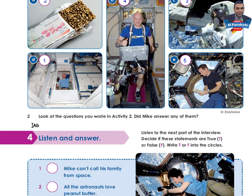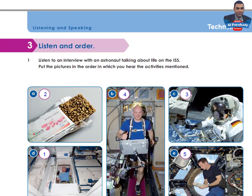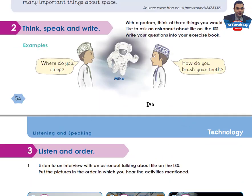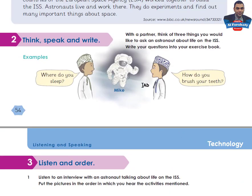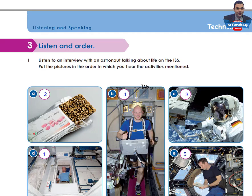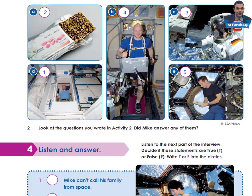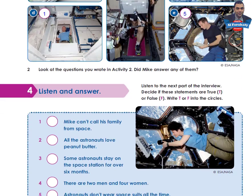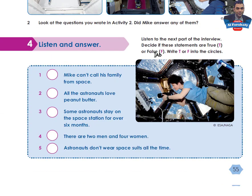Look at the questions you wrote in Activity 2. Did Mike answer any of them? You were asked to write three questions to ask an astronaut about life on the ISS. Did he answer any of these questions? Yes. Let's go to Activity 4.